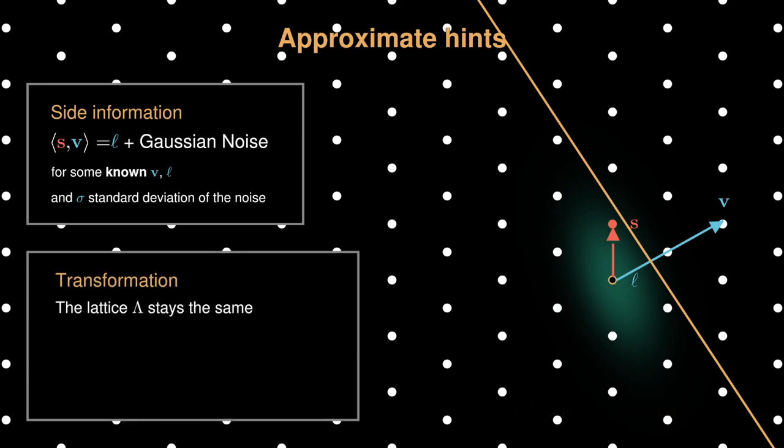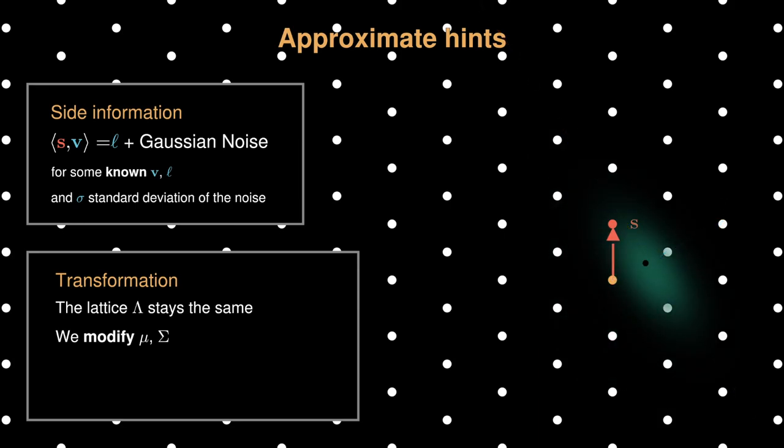To integrate the approximate hint, we keep the same lattice, but change the center and the covariance of the ellipsoid shape according to this conditional noisy information. As a result, the new DBDD instance has a smaller ellipsoid and is easier to solve. That's all for the hints, and you may see that each hint may affect the dimension and the volume of the lattice and the covariance of the ellipsoid in a predictable way.